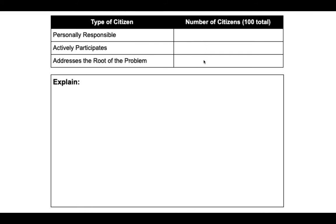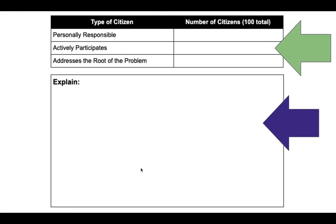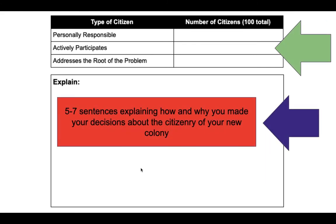If you get stuck about what the categories mean, your reading is right there — and by the way, this last one down here, that's a justice-oriented citizen. Then you're going to explain your reasoning here in five to seven sentences. Why did you make the choices you did? For example, why did you pick 50 justice-oriented citizens? What do you think that would do to your society? There's no wrong way to do this — I just want to see how your brains are working and how you're orienting what the citizenship stuff even means. So you're going to complete the table, then explain in five to seven sentences how and why you made your decisions about the citizenry of your new colony.